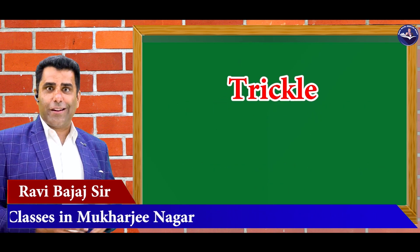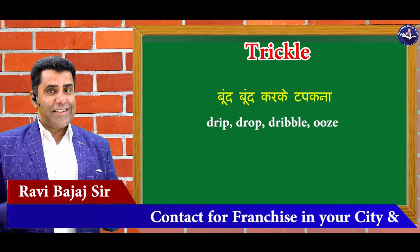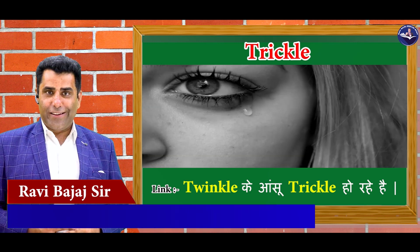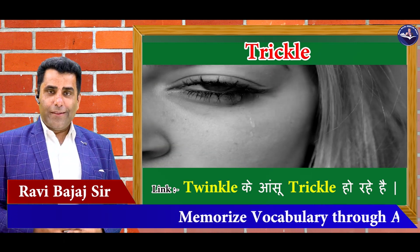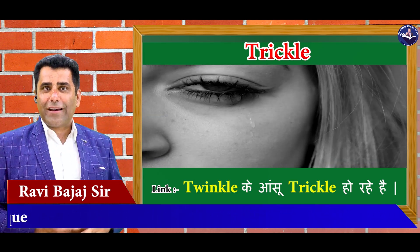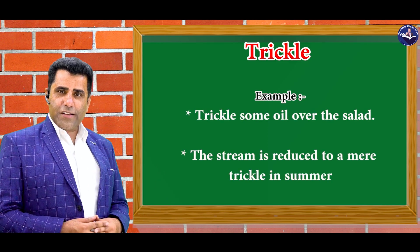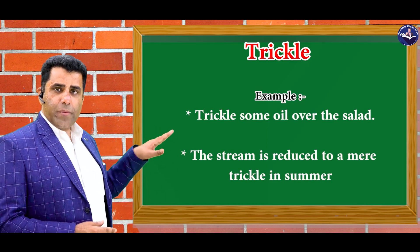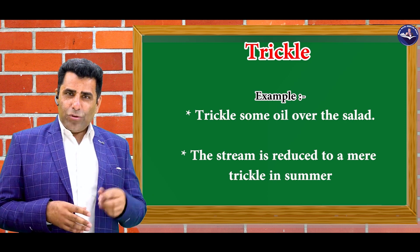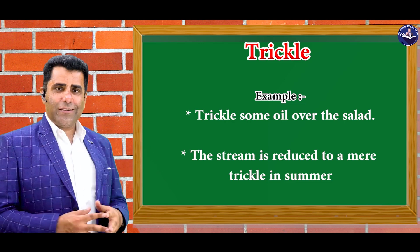And the last word for this session is trickle — boond boond karke tapakna. Trickle: drip, dribble, drop ya ooze bhi kehte hain. And the link word is twinkle — ye jo Twinkle ladki hai na, Twinkle ke aansu trickle ho rahe hai. Abhi inki mother aayi thi — Dimple ki bari hai, ab aayi Twinkle Khanna. Toh dimple ke gaal pe dimple pade gai thi, aur Twinkle ke aansu trickle ho rahe hai. Let's see the sentences — trickle some oil over the salad. The stream is reduced to a mere trickle in summer, jaise kabhi kabhi nadiyaan sookh jati hai garmiyon mein, toh bas bahot kam paani aane lagta hai dip dip karke — use kehte hain trickle.